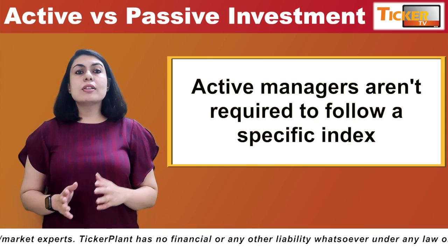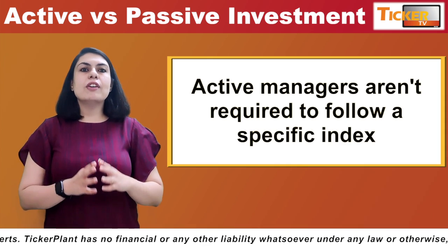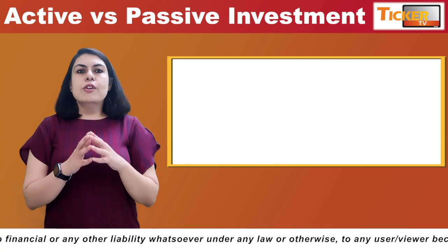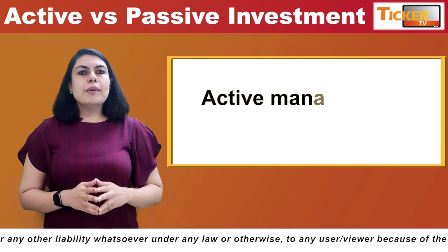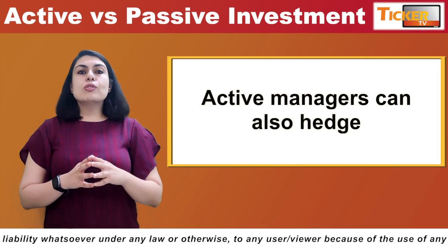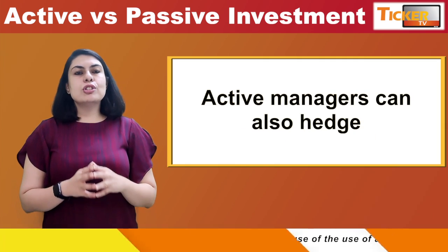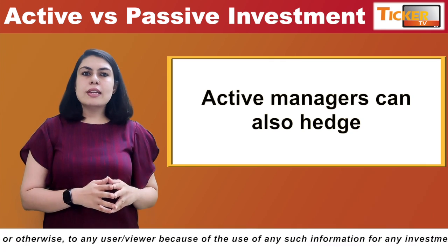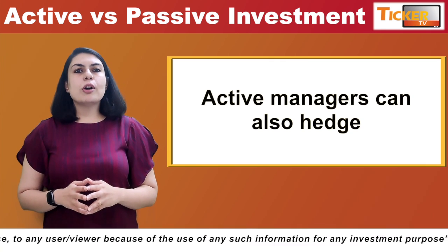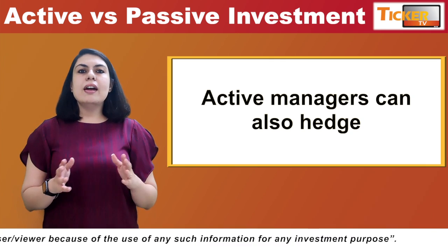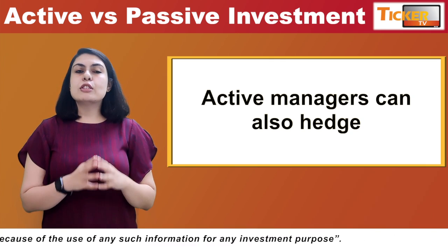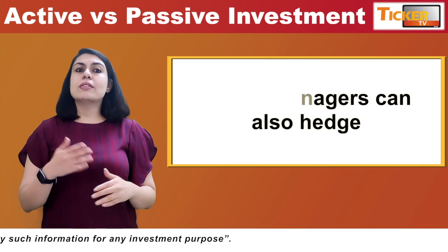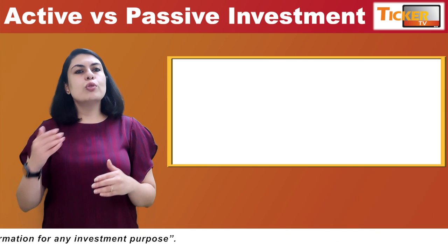They can buy those stocks they believe have the potential to grow on the upside. Fifth, active managers can also hedge their bets using various techniques such as short sales or put options, and they are able to exit specific stocks or sectors when the risk becomes too big.